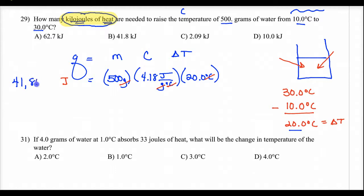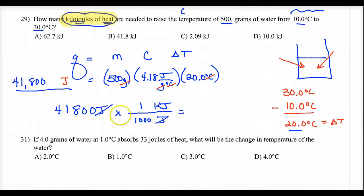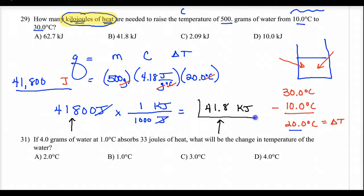So 41,800 joules — that's not kilojoules. Let's convert: to get rid of joules, put joules on the bottom; we want kilojoules on top. Since kilo means 1,000, every 1 kilojoule equals 1,000 joules. Joules cancel, and dividing by 1,000 gives me 41.8 kilojoules. Notice: I start with three sig figs and end with three sig figs. That's why B is your answer — choice B.